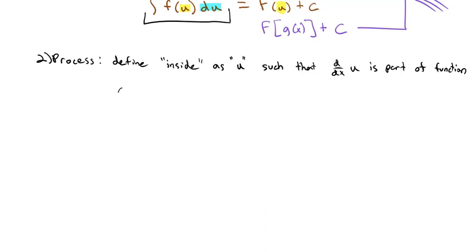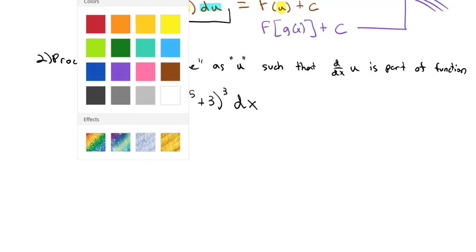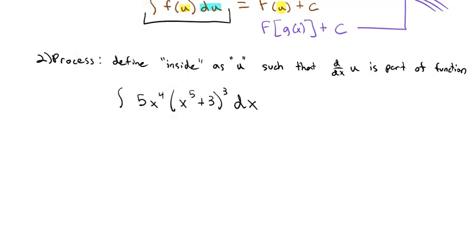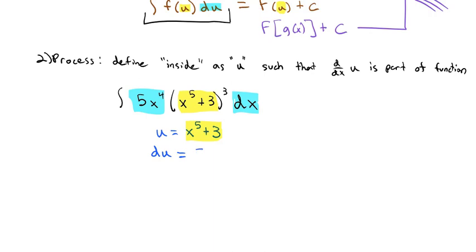Here's what I mean by that. Say we have the integral of 5x⁴ times (x⁵ + 3)³ dx. Notice the inside function (x⁵ + 3) has derivative 5x⁴, which is part of the function with the dx. So I'm going to define u to be that inside stuff, x⁵ + 3. Then du, its derivative, is 5x⁴ dx, which we always multiply by a dx.